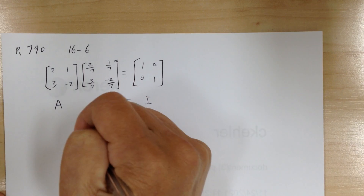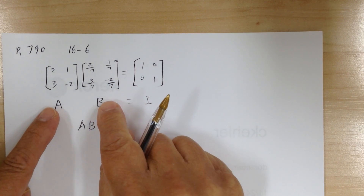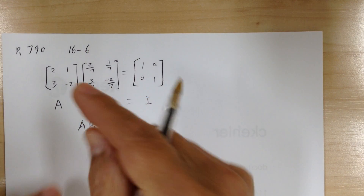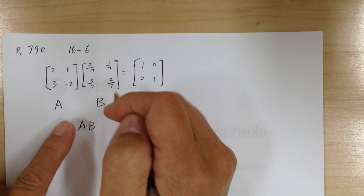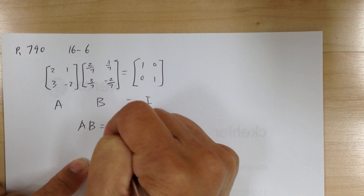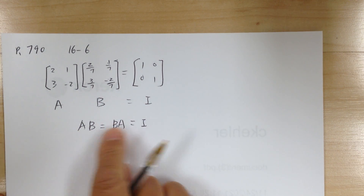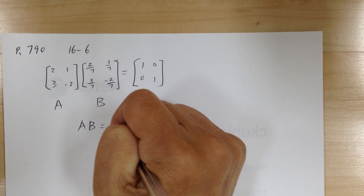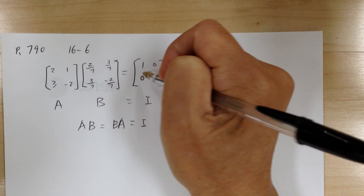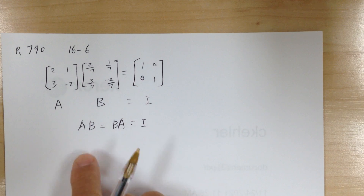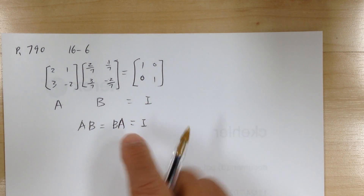A times B in this case they are interchangeable, but you have to be careful — most of the time with matrices you cannot switch the order. But in some special occasions you may. So when you have A times B equal to B times A and this equals the identity matrix I, these are called inverse matrices. The identity matrix has ones on the diagonal and zeros everywhere else.